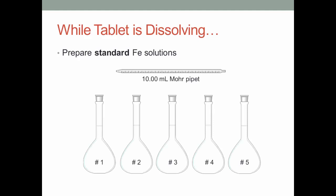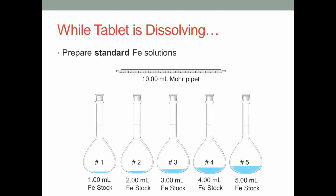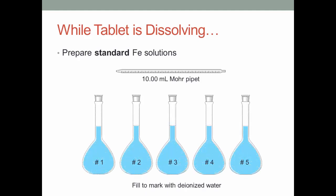Take 5 volumetric flasks, and using a 10 ml Mohr pipette, put 1 ml of the iron stock in the first, 2 ml of stock in the second, 3 in the third, 4 in the fourth, and 5 in the fifth. Then, fill them all to the mark with deionized water and mix well. Make sure to record the exact amount of stock solution you put in to two decimal points.